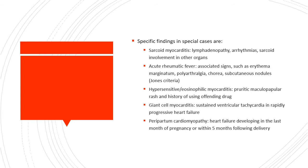Giant cell myocarditis patients usually present with sustained ventricular tachycardia and rapidly progressive heart failure. Female patients with peripartum cardiomyopathy and concomitant myocarditis present with heart failure developing in the last month of pregnancy or within five months following delivery.